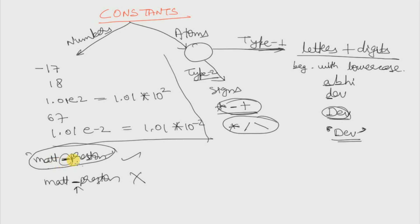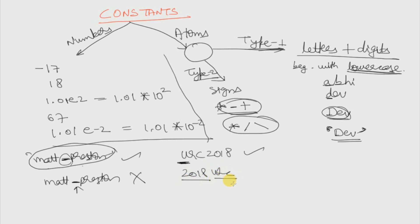Let us see another example: 'urc2018' is a valid atom because it begins with a lowercase letter and can have letters plus digits, so it is a Type 1 atom. But if I write '2018urc', even though it is a combination of letters and digits, the rule of beginning with a lowercase letter has not been satisfied because it begins with a digit — so this is not an atom.